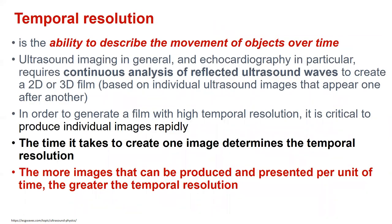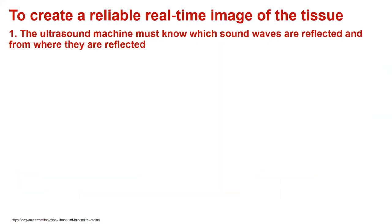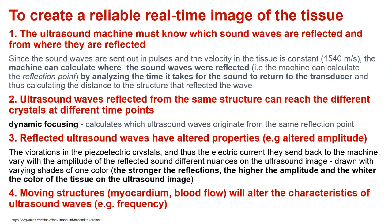The temporal resolution is the ability to describe the movement of objects over time. The more images that can be produced and presented per unit of time, the greater the temporal resolution. To create a reliable real-time image of the tissue, the ultrasound machine must know which sound waves are reflected and from where they are reflected. Ultrasound waves reflected from the same structure can reach different crystals at different time points, that's why we have to use dynamic focusing. The reflected ultrasound waves have altered properties, and moving structures will alter the characteristics of ultrasound waves.